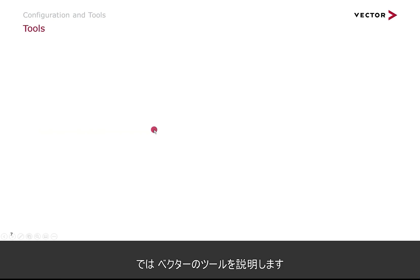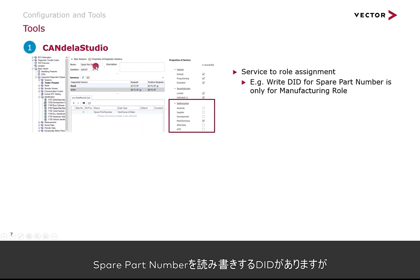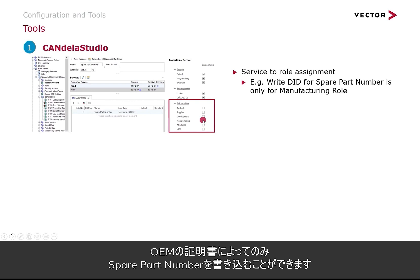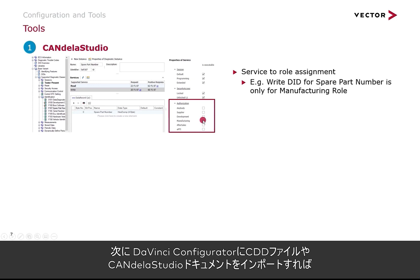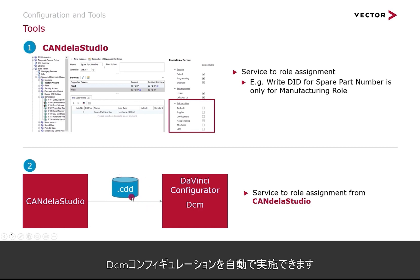Let's have a look at the Vector tools involved in this configuration. Everything starts with Candela Studio, where you can configure D-IDs — for instance, here we have a D-ID to read and write a spare part number. Obviously, you don't want people overwriting the spare part number, so you limit this to manufacturing only: only in manufacturer certificates are you allowed to write the spare part number. In a second step, in DaVinci Configurator, you import the CDD files or the Candela Studio document, and you automatically get your DCM configuration done by the Vector tooling.